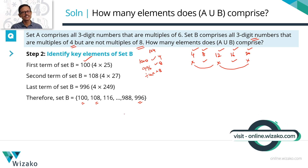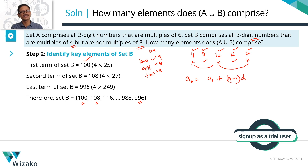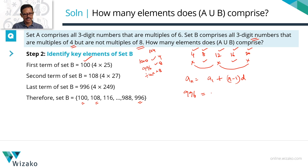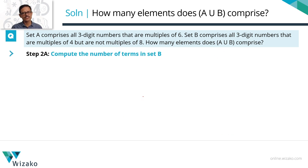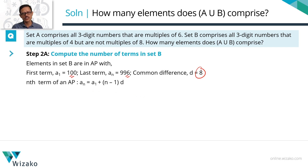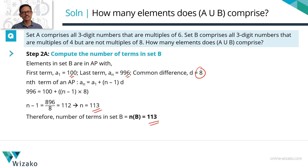To find the number of elements in Set B, use the AP formula. First term A₁ = 100, last term Aₙ = 996, common difference d = 8. Using Aₙ = A₁ + (n−1)d: 996 = 100 + (n−1)×8. So 896 = 8×(n−1), giving n−1 = 112, thus n = 113. Number of elements in Set B is 113. Step 2 done.